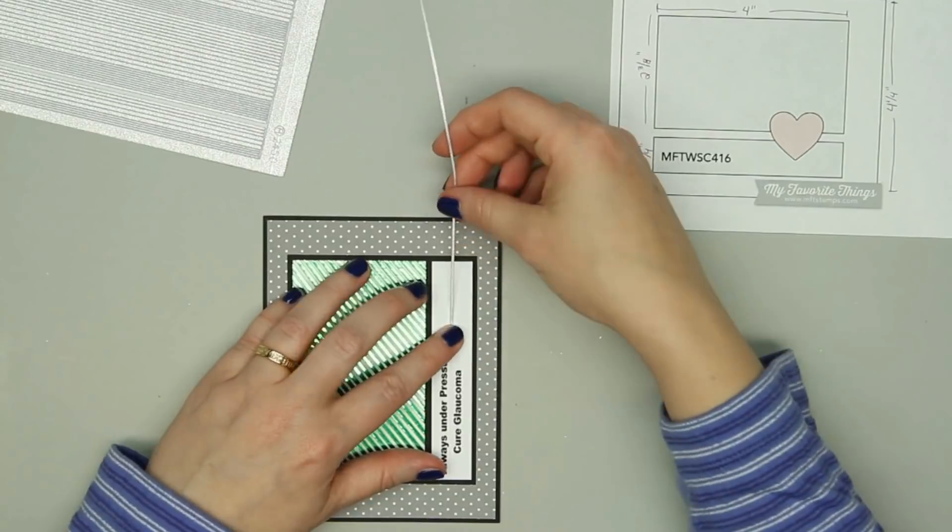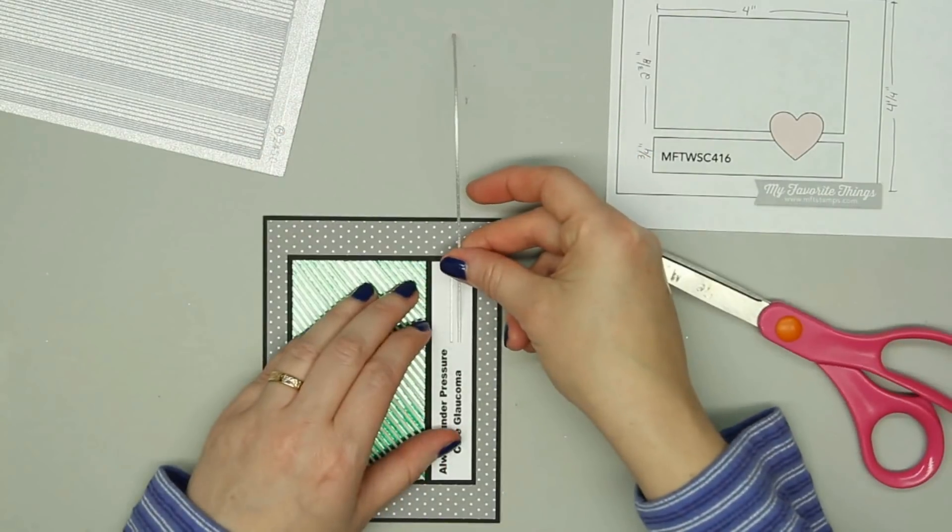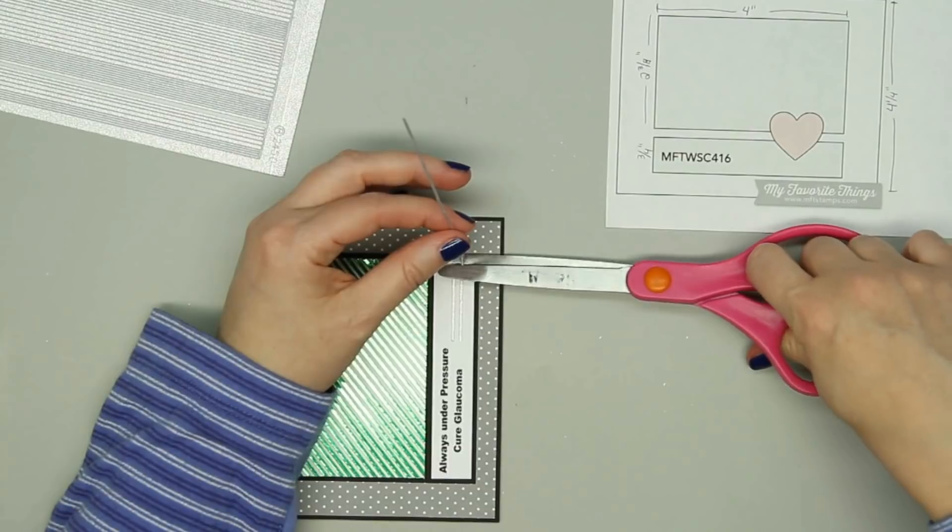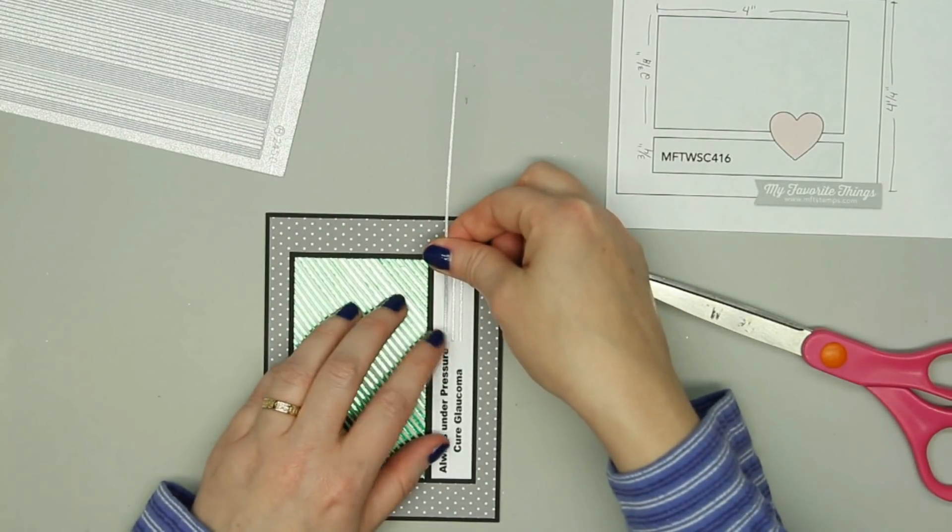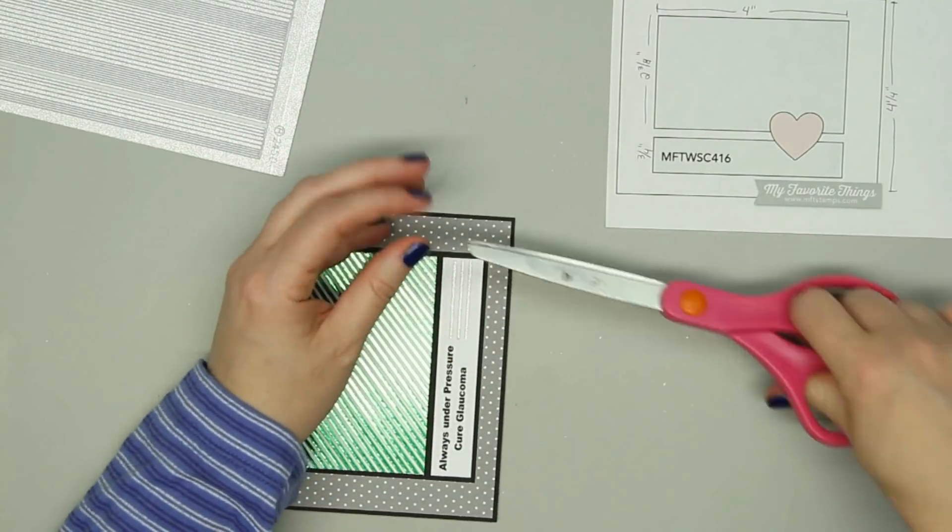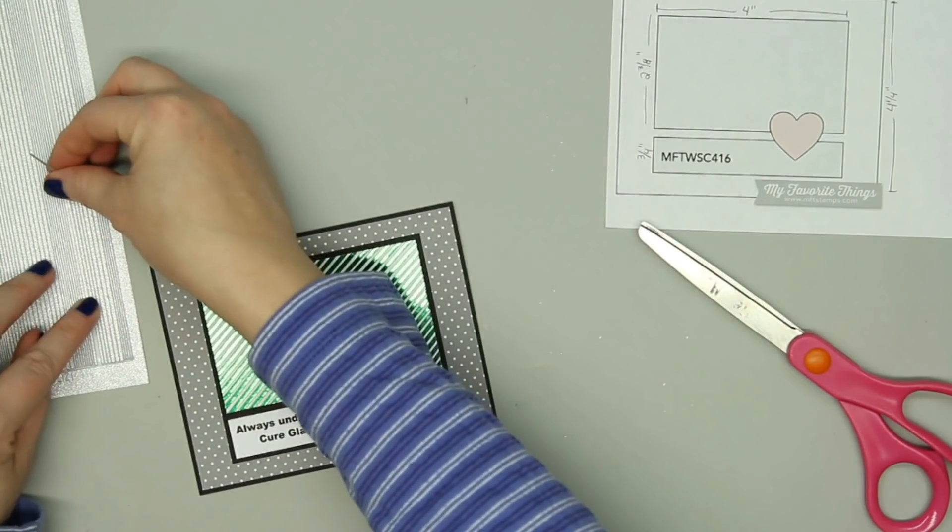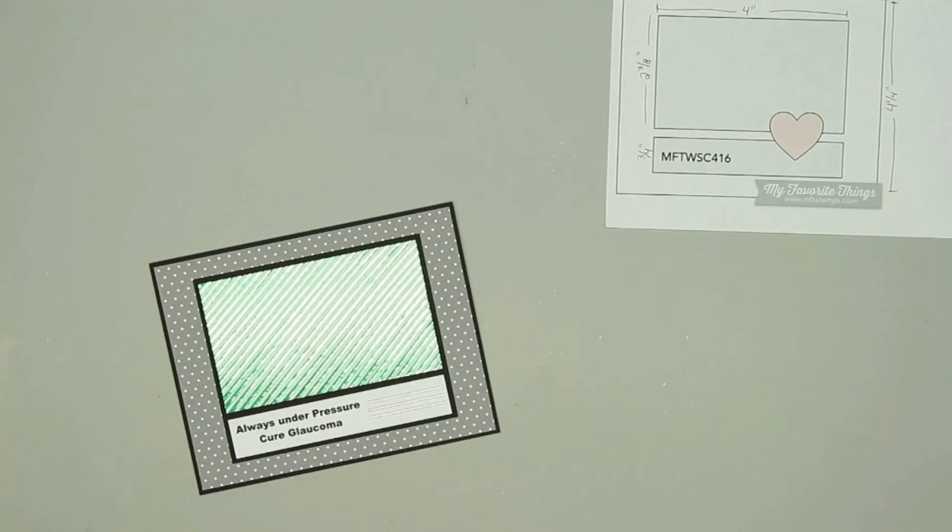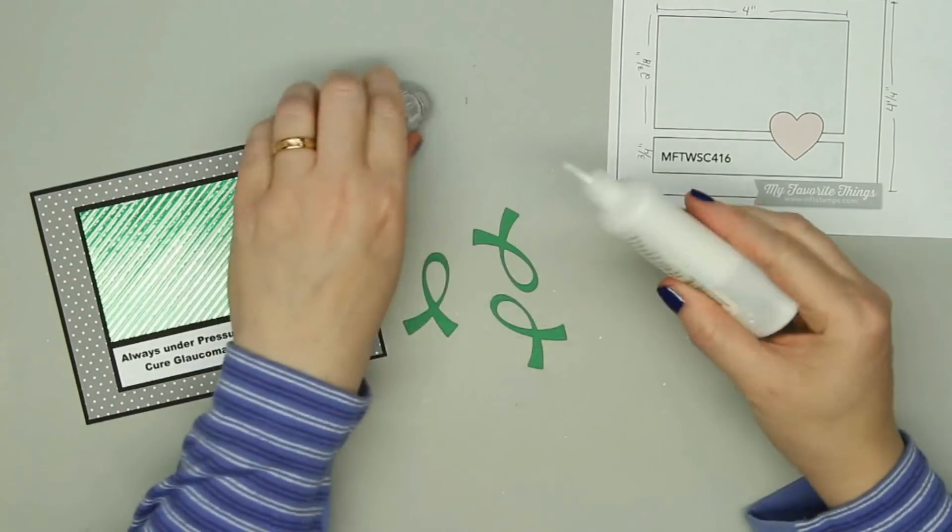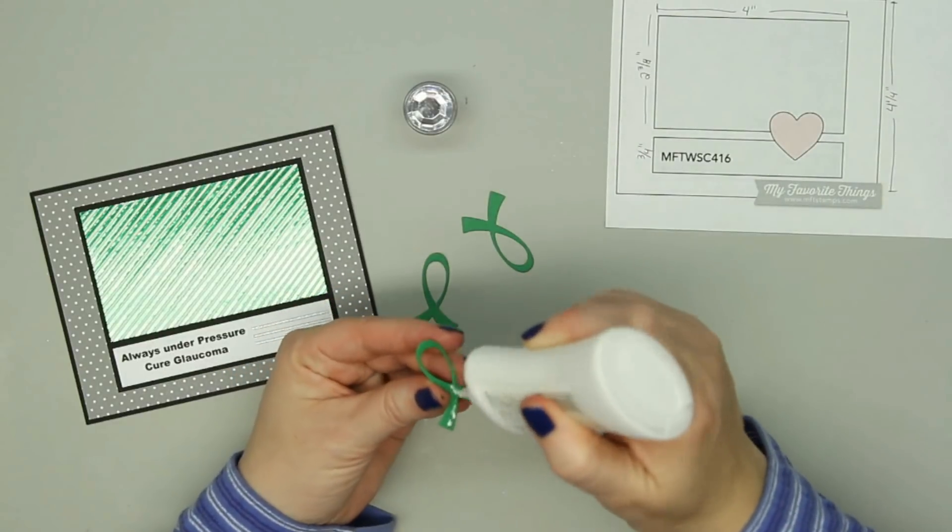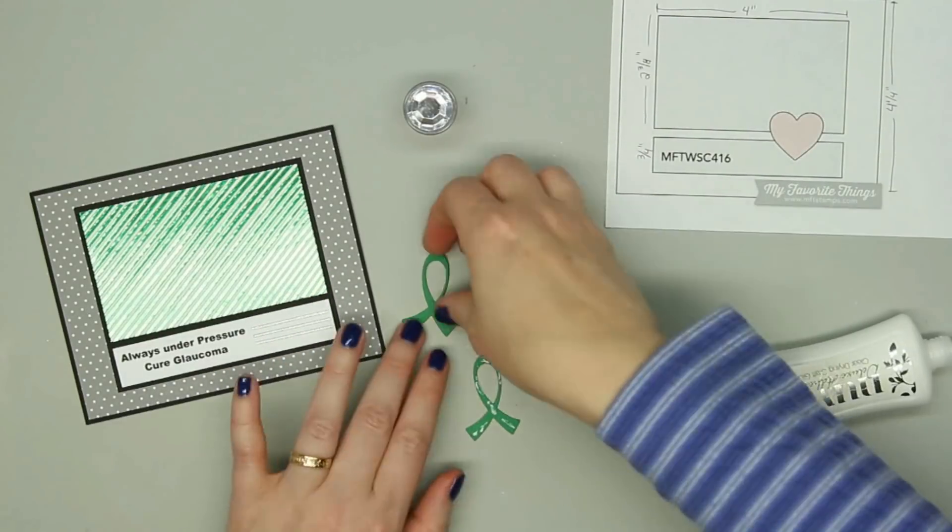Then I decided to pull out some of the moon dust silver peel offs and I'm just putting three small pieces right there next to the sentiment. Anybody who has ever owned some of the peel off stickers knows to always save any little pieces as you might need them for a future project.